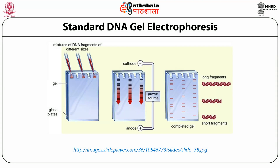Here is the schematic representation of standard DNA gel electrophoresis. You have an agarose gel with wells where your DNA samples are loaded. These samples are resolved in a linear fashion under the electric field. As DNA is negatively charged, it moves toward the anode. Based upon the length of DNA, fragments resolve into bands—longer fragments migrate slowly and are on top, while shorter fragments are faster and found at the bottom.